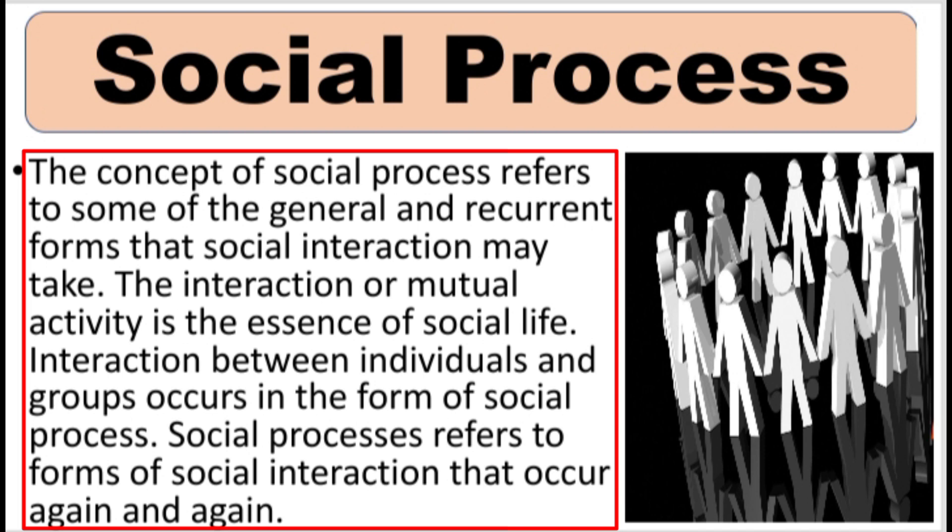As you already know, social life is very significant — it involves interaction and mutual activity of individuals. Without the interaction and mutual activity of individuals, social life is impossible. The interaction between individuals and groups occurs in the forms of social processes. Social process refers to the forms of social interaction which occur again and again.